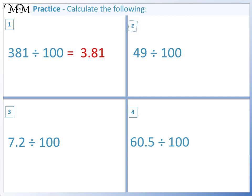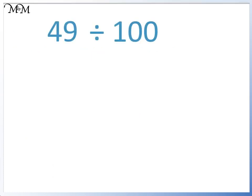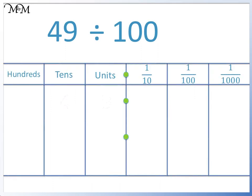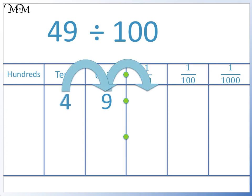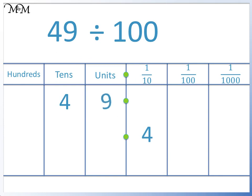Question 2: 49 divided by 100. Starting with the 4, we move two places to the right. We move the 9 to the hundredths column. There are no digits to the left of the decimal point, so we write in a 0. 49 divided by 100 equals 0.49.